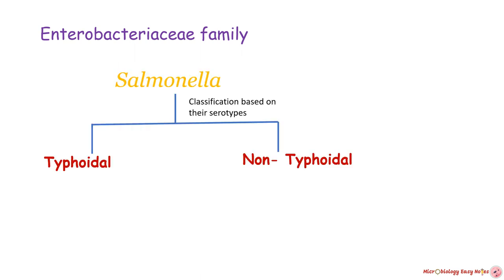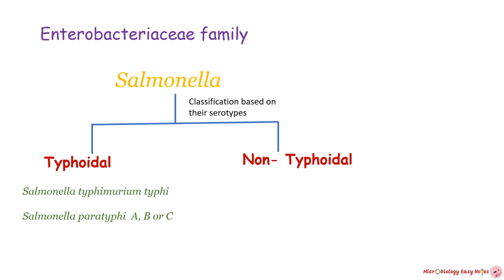Salmonella bacteria belongs to the Enterobacteriaceae family. There are different serotypes of salmonella species, and based on their serotypes there are two types: typhoidal and non-typhoidal. The typhoidal type is caused by Salmonella typhi — here 'typhi' is the name of the serotype. Another species that can cause typhoidal salmonellosis is Salmonella paratyphi A, B, or C, where A, B, C are serotype names. Non-typhoidal salmonellosis is caused by Salmonella enterica or Salmonella bongori.